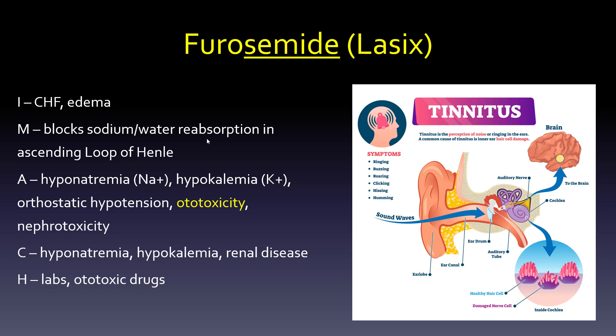Furosemide blocks sodium and water resorption in the ascending loop of Henle. Because of that, we get hyponatremia — losing sodium — and also hypokalemia. Both the ascending loop of Henle drugs and the distal convoluted tubule drugs cause hypokalemia. We'll get to the southeastern section where we'll discuss hyperkalemia.